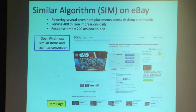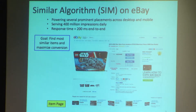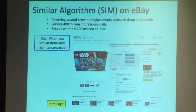The algorithm I'll be talking about is on the item page. Here we have a typical item page on an e-commerce site with a picture, a title, a price, and right below, five similar item recommendations. Our goal is to find the most similar items and maximize conversion for eBay. Some additional engineering challenges: we serve about 400 million impressions every day, and our response time has to be below 200 milliseconds end to end.